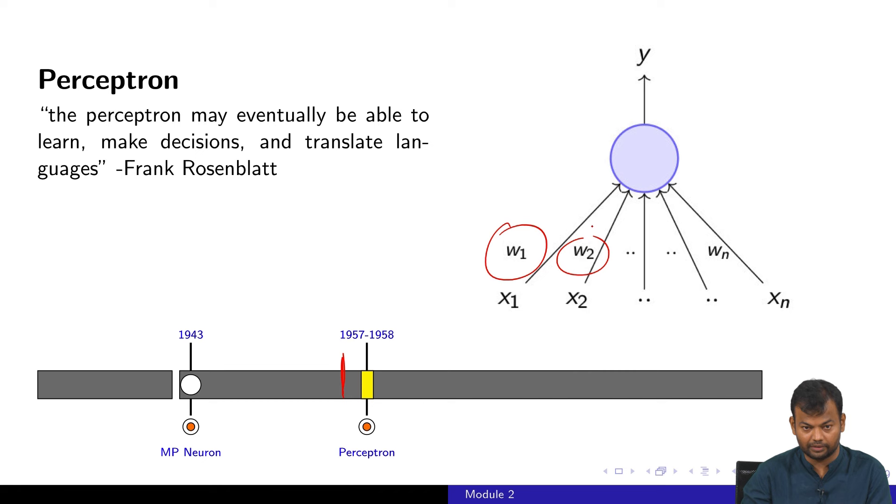Do you find anything odd about this statement? Learn and make decisions make sense, but why translate languages? Why such a specific interest in languages? You have to connect back to history. This is the period of the Cold War and a lot of interest in translation was fueled by the war, where countries at loggerheads wanted to understand what the other country was doing but they didn't speak each other's language. That's why there was a lot of interest from espionage point of view.